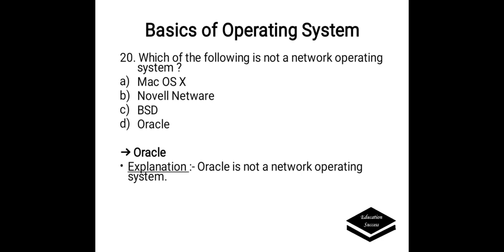Which of the following is not a network operating system? Options are A. Mac operating system, B. Normal network, C. BSD, D. Oracle. Correct answer is D, Oracle. Oracle is not a network operating system.